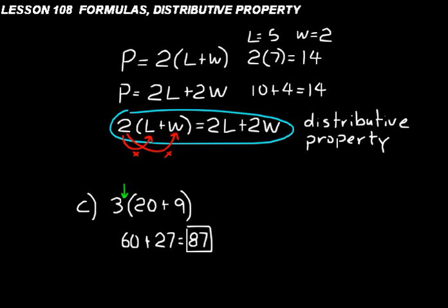There's no symbol there — it means multiplication. You're doing 3 times 20 plus 3 times 9, or 2 times L plus 2 times W. You distribute that number on the outside of the parentheses over the other numbers by multiplying all of them. There doesn't have to be just 2 numbers — there could be 15 numbers added together inside the parentheses and you'd still multiply all of them by the value outside.